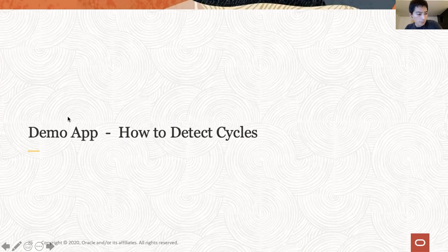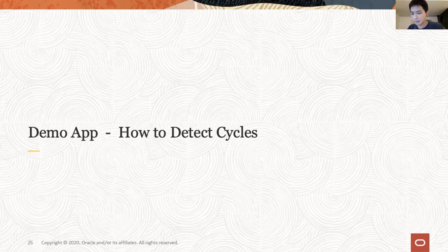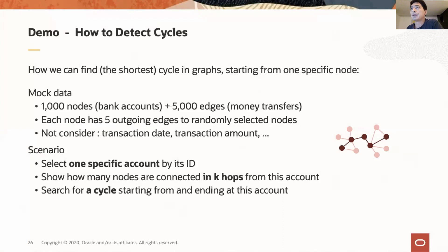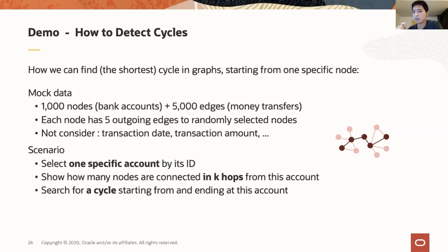In the next 15 minutes, I'm going to show one small demo and one POC experience about machine learning, and one customer reference. I'll show a simple demo first about detecting cycles, as we saw in the Indian bank. I've got mock data with 1,000 nodes — 1,000 bank accounts — and each account has five outgoing money transfers, so it contains 5,000 money transfers in total. We'd like to pick one account and show how many other accounts are connected in several hops, and if there's any cyclic money transfer starting from that account.